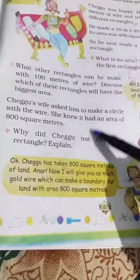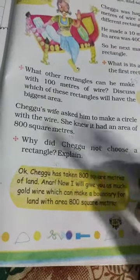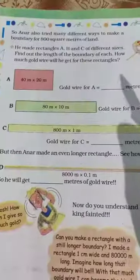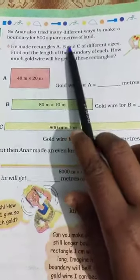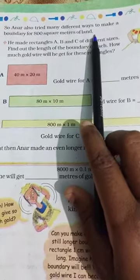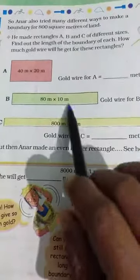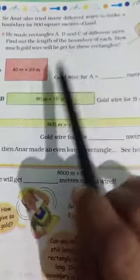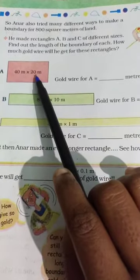Now Cheggu has taken 800 square meters of land. The king says to Anar: I will give you as much gold wire as is needed to make the boundary of land with an area of 800 square meters. So Anar also tried many different ways to make a boundary for 800 square meters of land, planning to make different rectangles with different perimeters. The only condition was that the area should be 800 square meters. He made rectangles A, B, and C of different sizes — find the length of the boundary of each, and how much gold wire he will get.